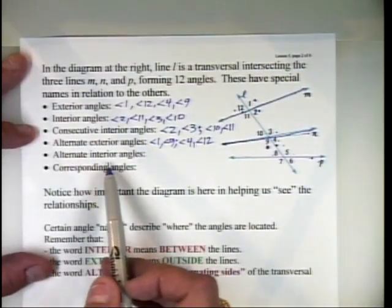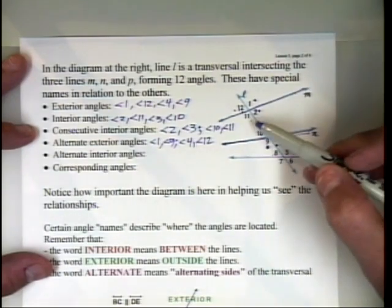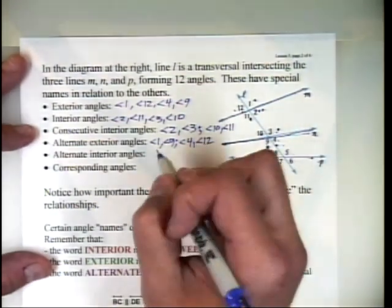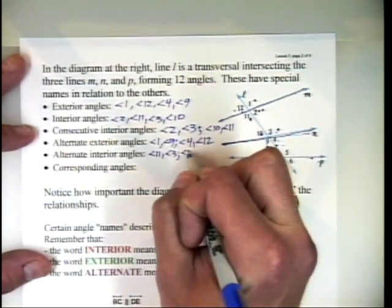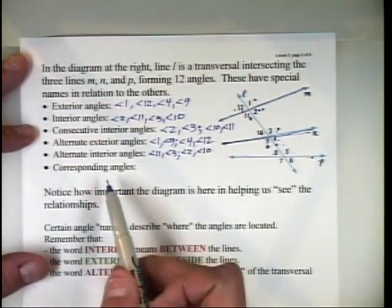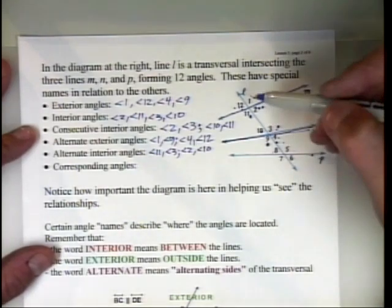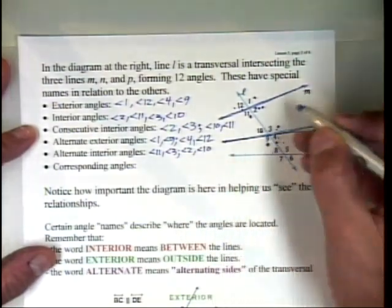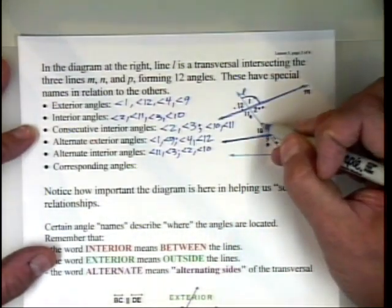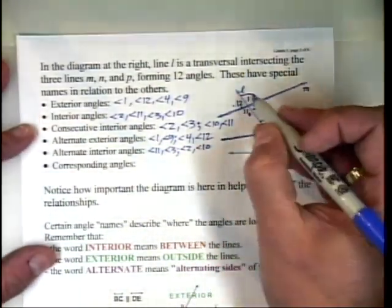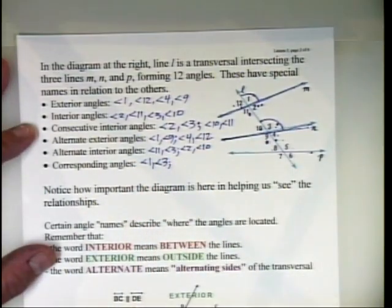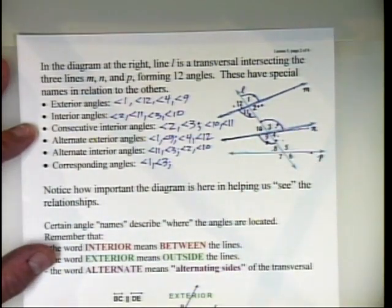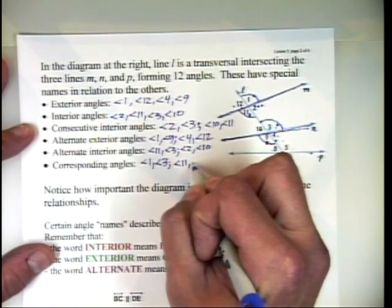Then we have alternate interior angles — opposite sides of the transversal, on the inside between our two lines. That gives us pairs: angle 11 and angle 3, and angle 2 and angle 10. Finally, corresponding angles are in the same relative location — angle 1 and angle 3 are corresponding, as are angle 11 and angle 9. And there are others, but you get the idea.